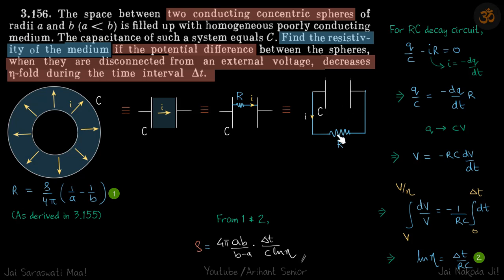So now you can see that this is an RC decay circuit where the capacitor is slowly losing its charge and its potential. And that's what they have given, that in delta t time the potential across the capacitor decreases by eta times.